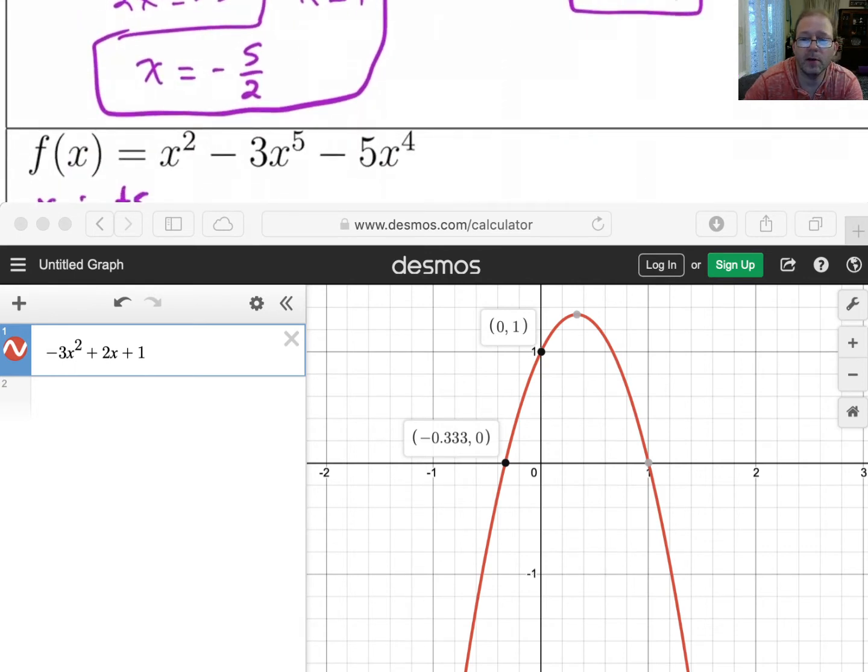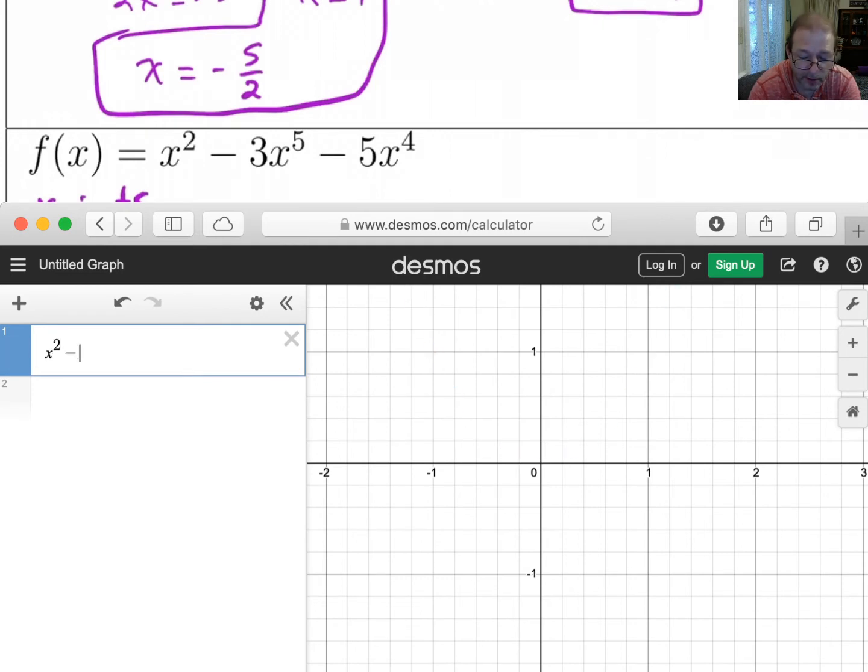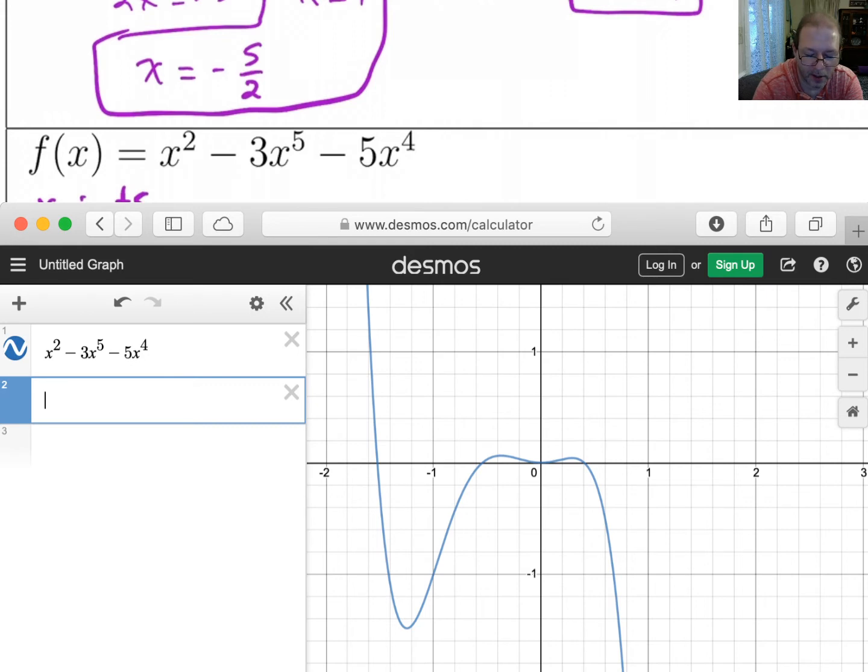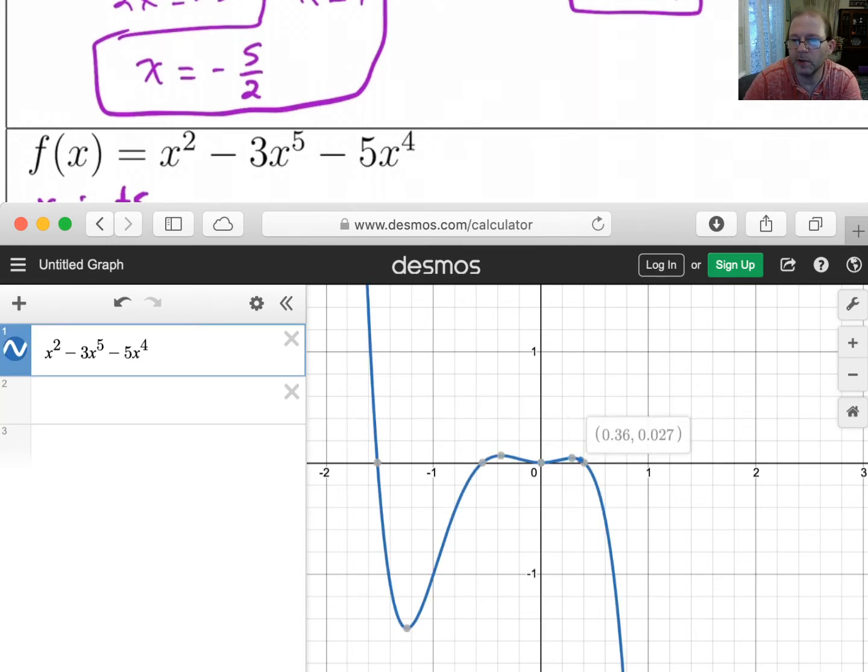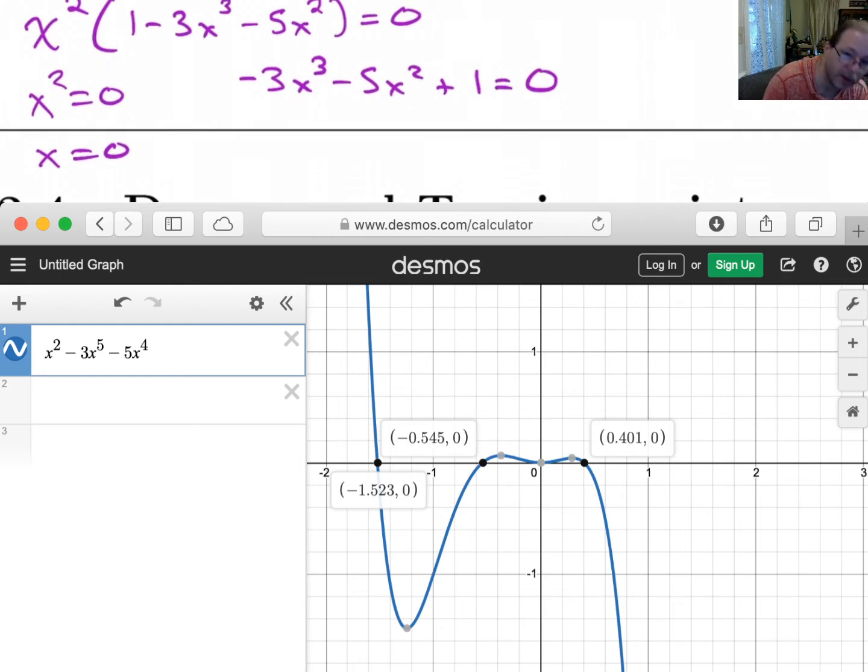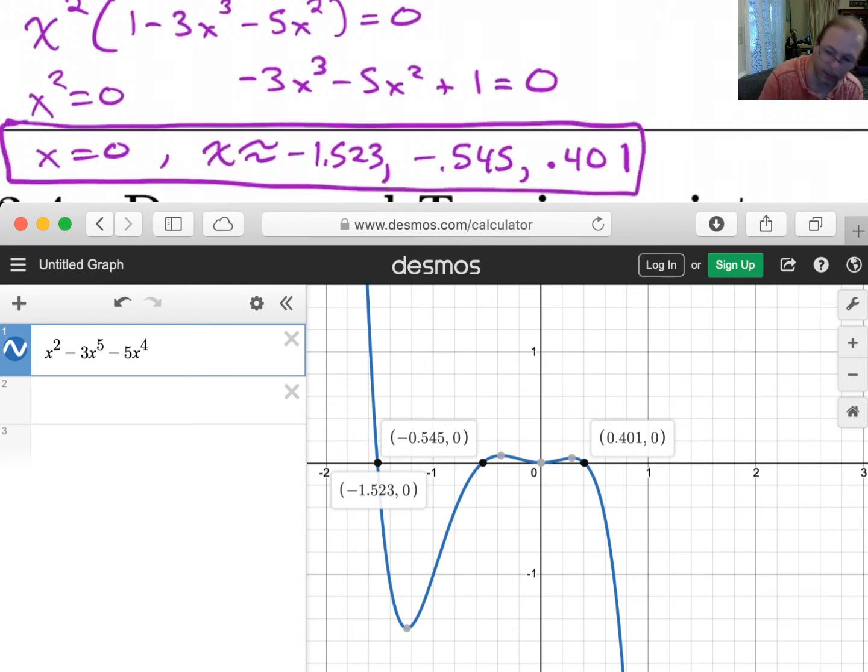Let's see. What is this one? This is x² - 3x⁵ - 5x⁴. So it's that fun equation. And notice I, well, what did I find earlier? I found 0 was a solution. Looks like we got three more. 0.401, and that's going to be an approximation. So getting these others, we're just going to get from Desmos and say they are approximately -1.523, -0.545, and 0.401. Alright. And like I say, there's not really a much better way to do that.